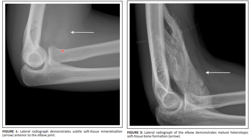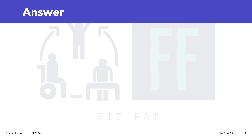In the first X-ray, you can see a lateral radiograph of the elbow joint — without an X-ray you can detect this early heterotopic ossification by performing an MRI. In the second figure, you can see the lateral radiograph of the elbow joint where the heterotopic ossification is mature and soft tissue bone formation has already occurred.